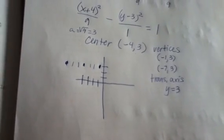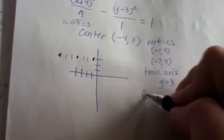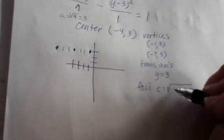Okay, next I believe we found the foci. So foci, we have to go, c is the square root of a² plus b².